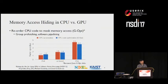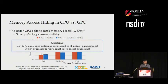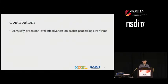They showed that by reordering CPU code with optimizations such as group prefetching and software pipelining, they can achieve comparable or even better performance over GPU for a number of network applications. In light of these results, we ask ourselves: can CPU code optimization be generalized to all network applications, and ultimately, which processor is more beneficial in packet processing? In this work, we demystify each processor's effectiveness on packet processing algorithms.